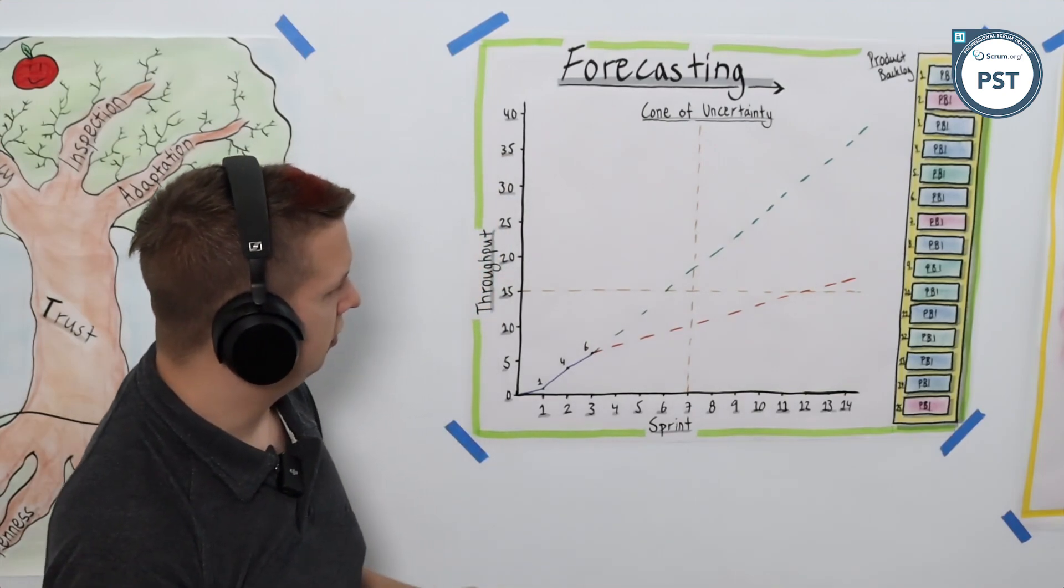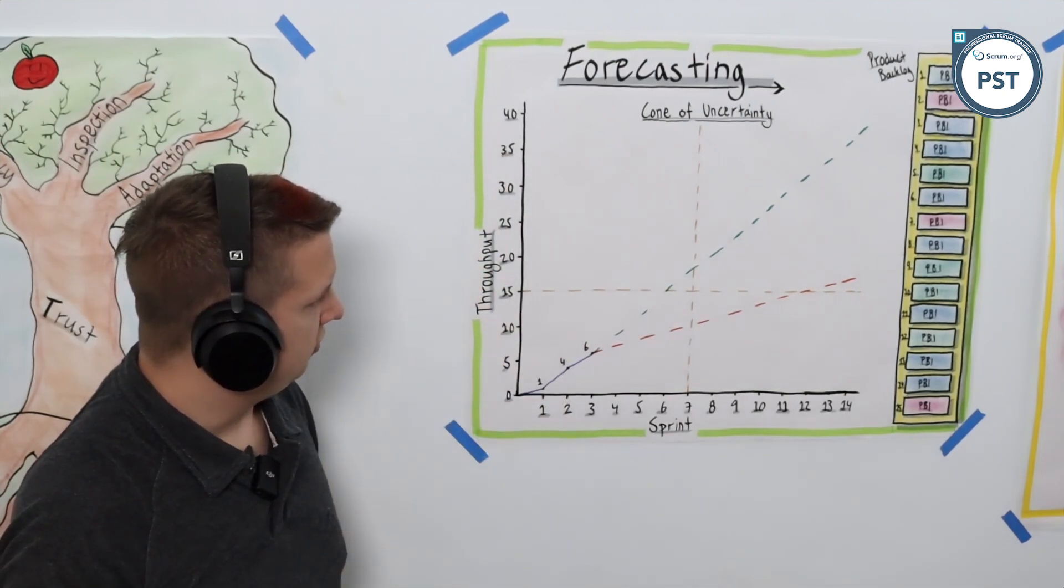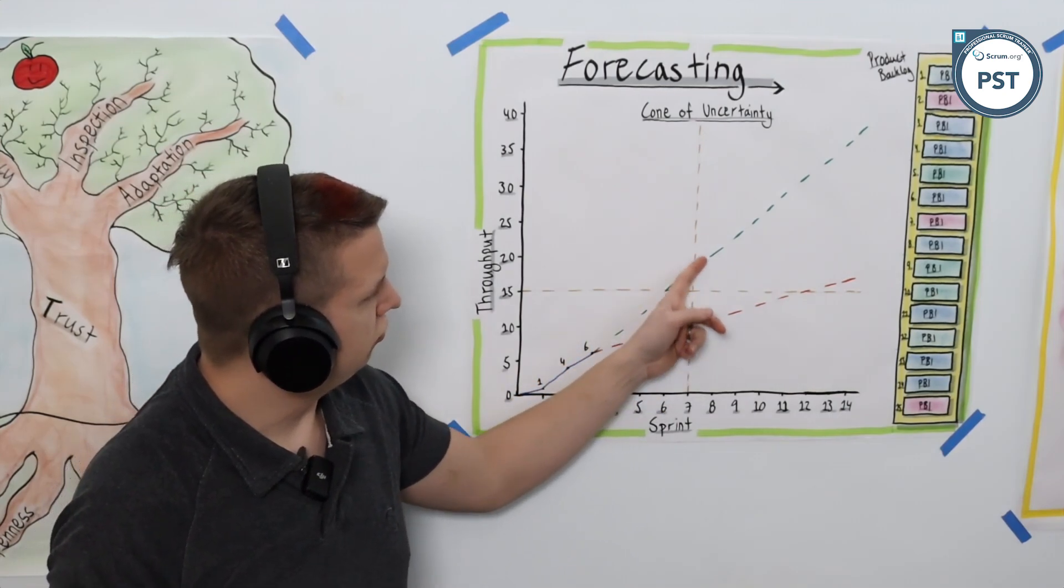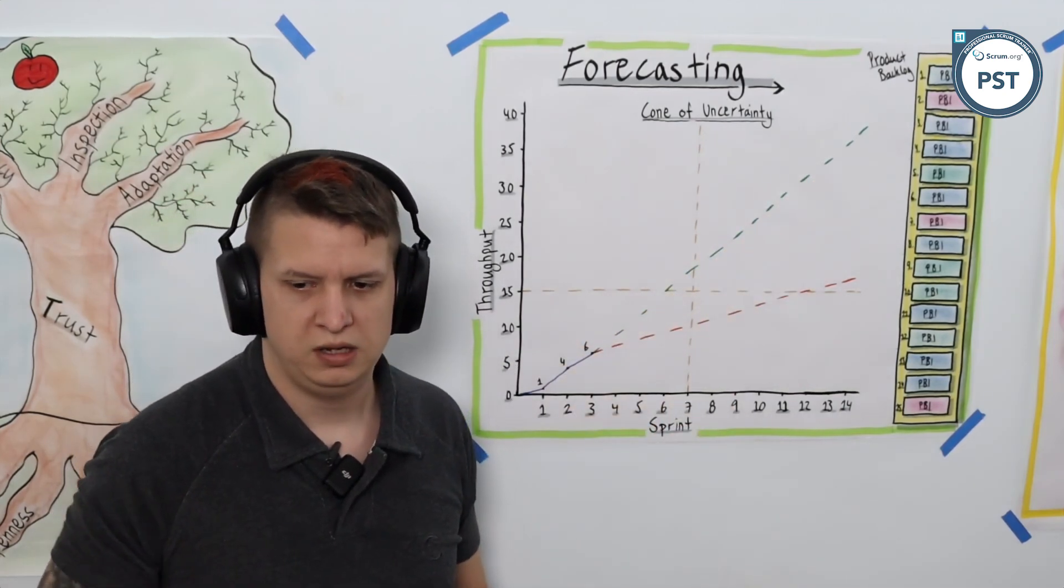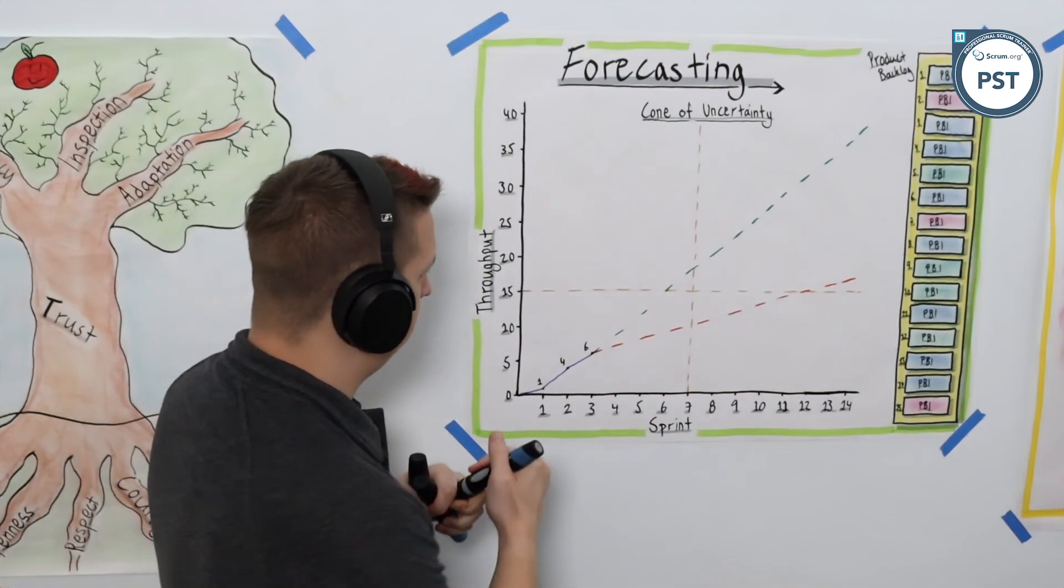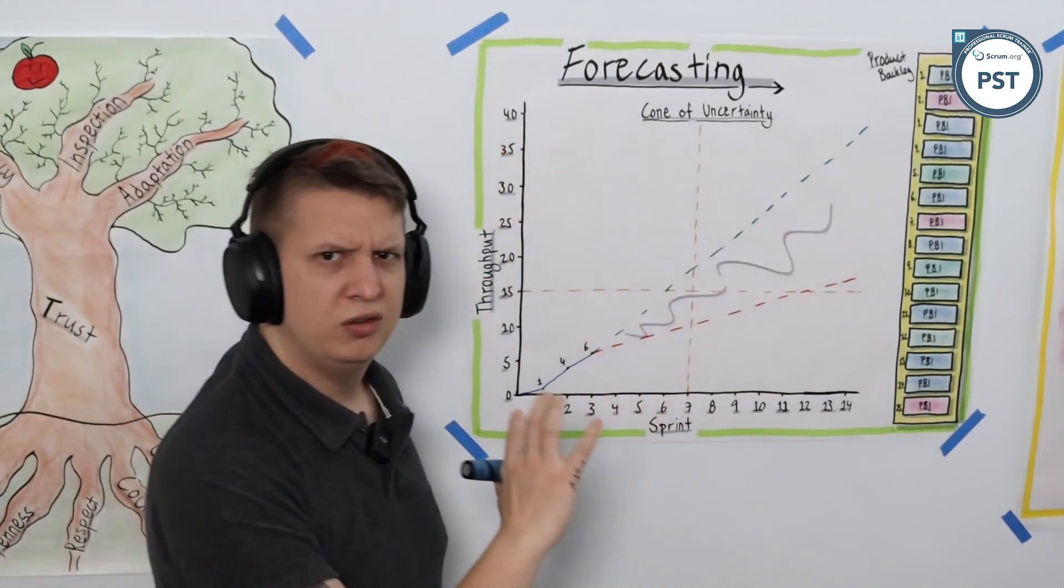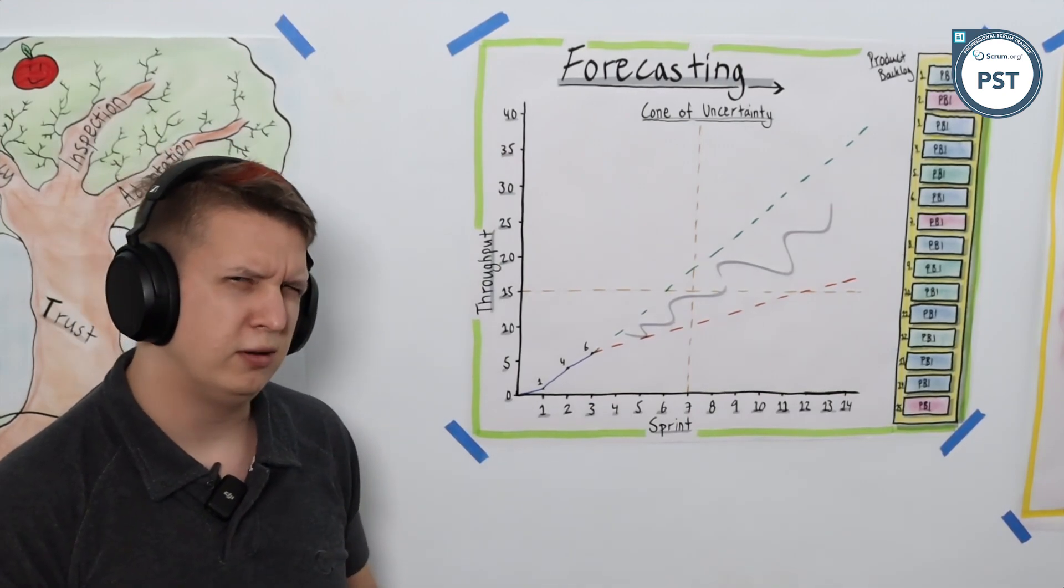Looking at this, we've got ourselves that cone, which means the reality is probably somewhere in the middle. If we want to look at where the average is going to be, somewhere between those two lines is probably what's going to happen.